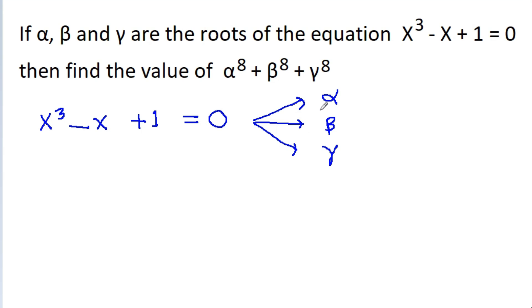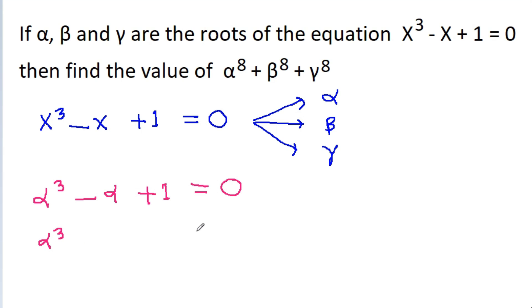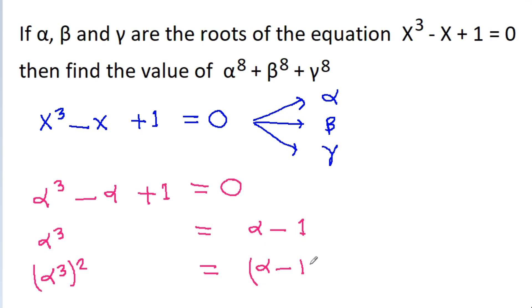Since alpha is a root of this equation, it must satisfy the equation. So we get alpha³ - alpha + 1 = 0, which gives us alpha³ = alpha - 1. Now for alpha⁸, if we square both sides, we get (alpha³)² = (alpha - 1)².